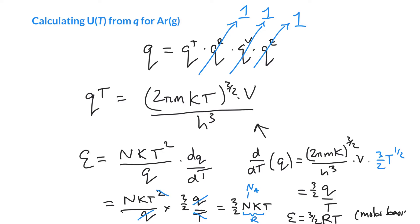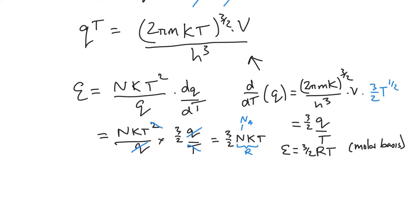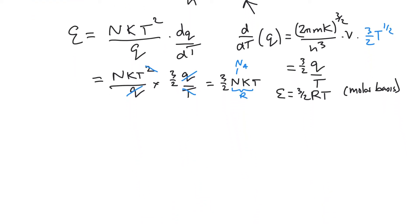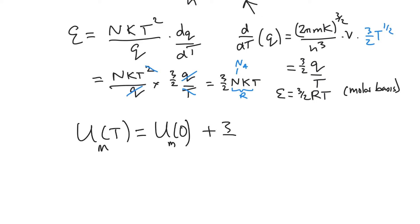Normally we're interested on a molar basis. The molar internal energy at temperature T equals the molar internal energy at absolute zero plus 3/2 RT. This front term covers the zero-point energy — there's actually no zero-point energy for translation, but you can think of it as the energy of the nucleons and the electrons in the atom. All those things aren't really changing, so it's not a big deal.